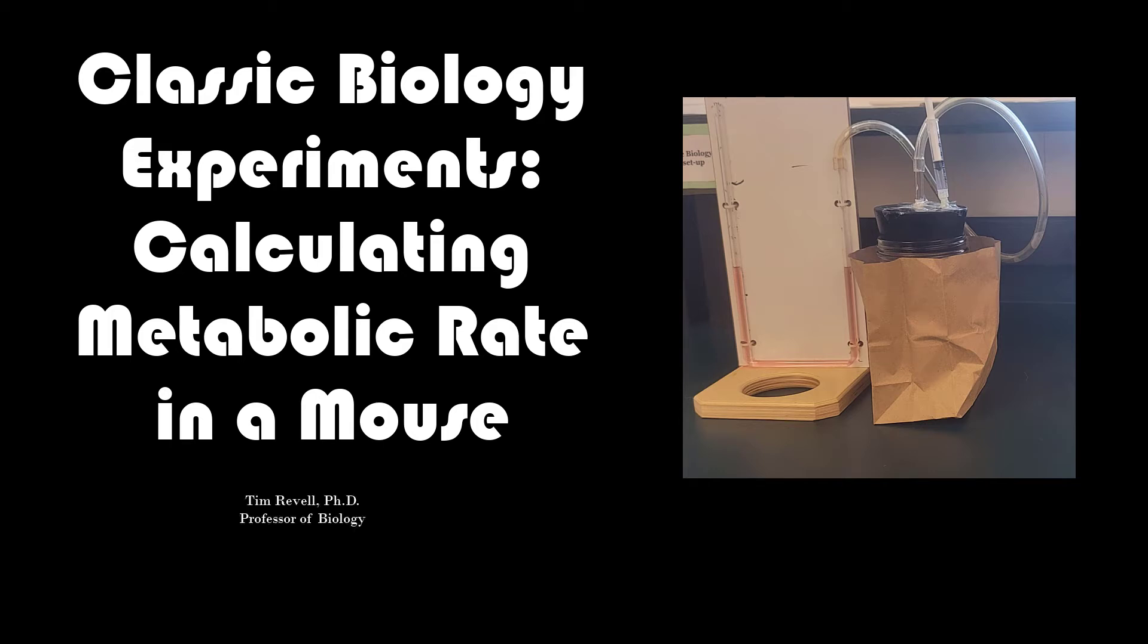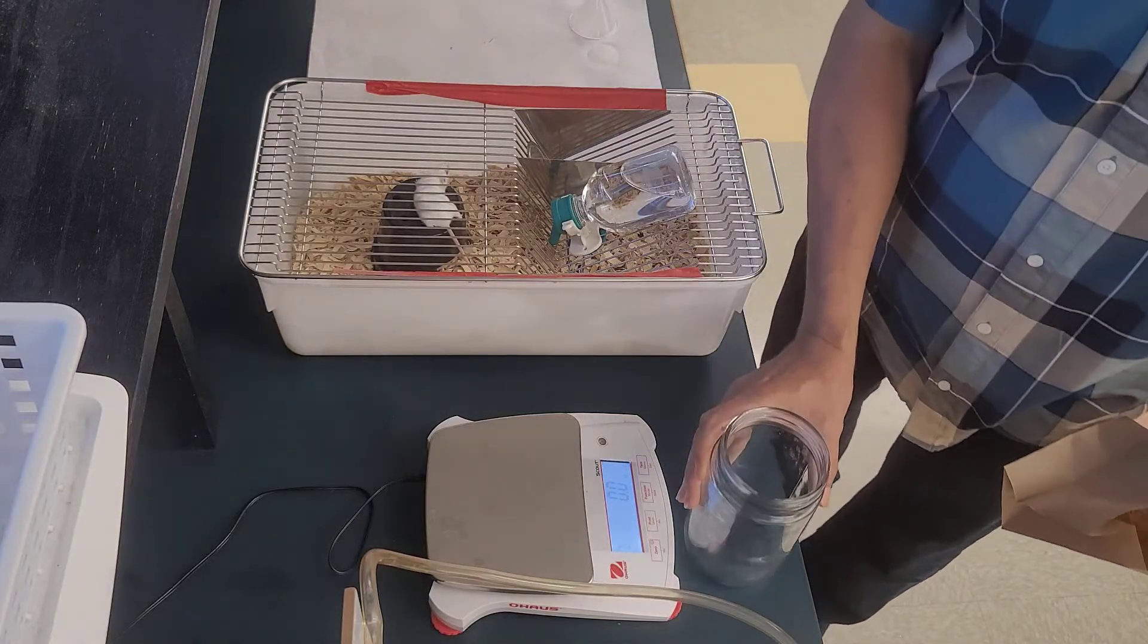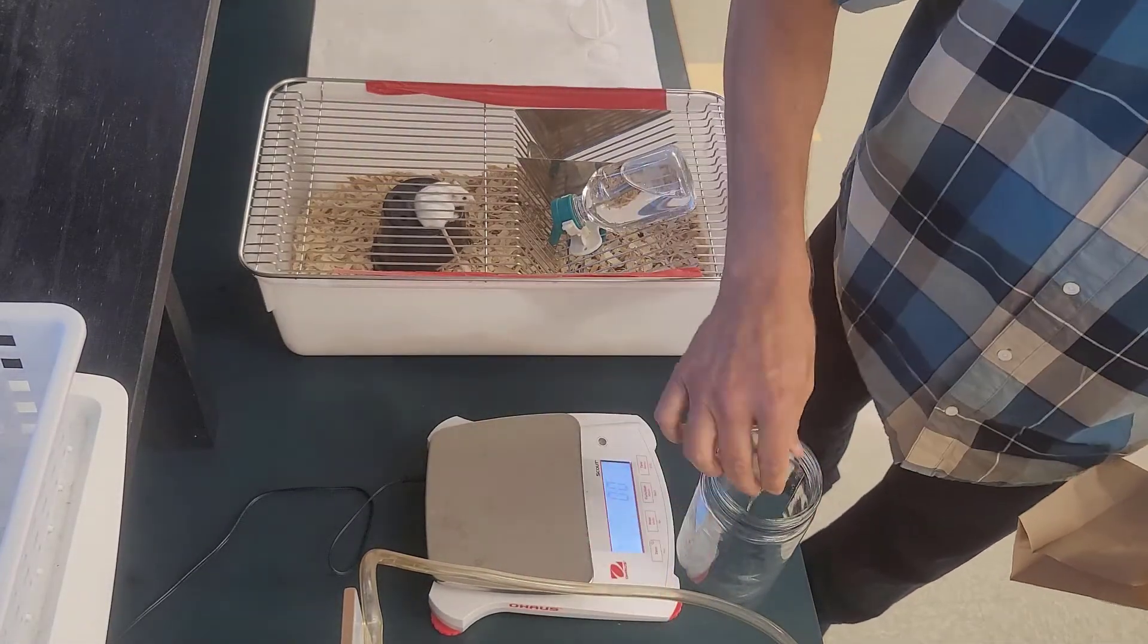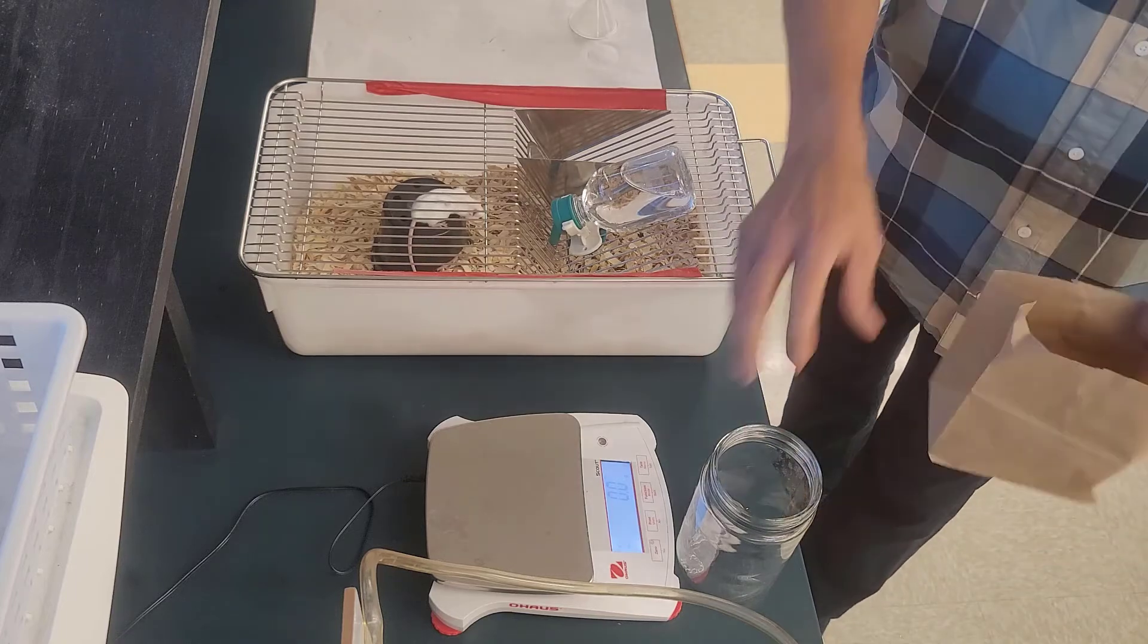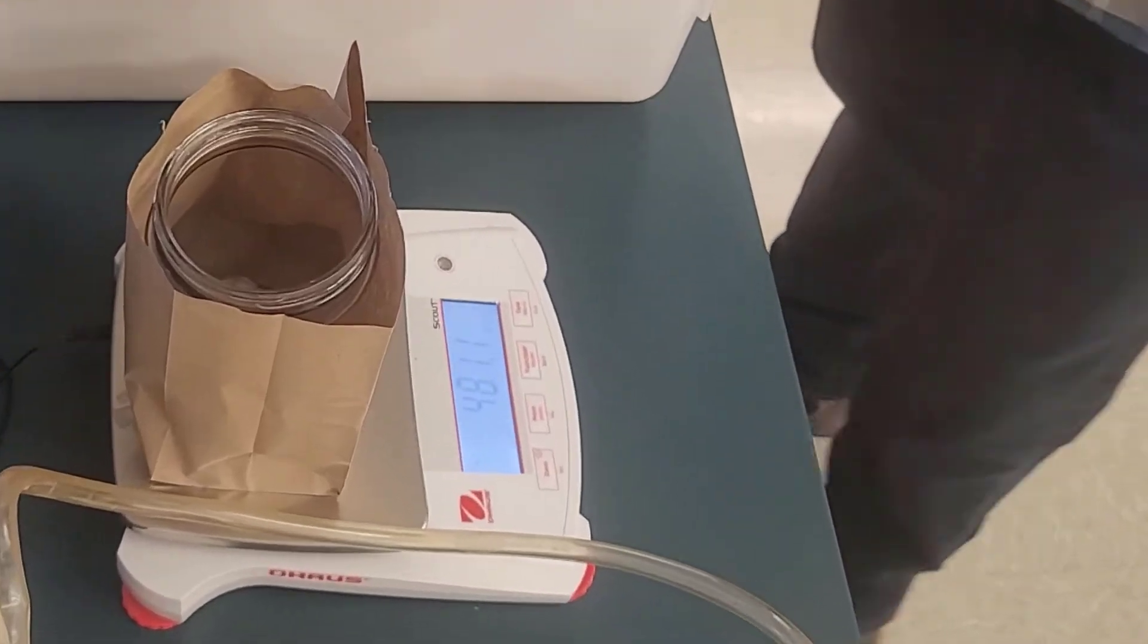Okay, so today metabolic rate of a mouse. We start off by taking a jar and putting a chemical packet in it with soda lime and a paper bag around it, and we need to weigh that.